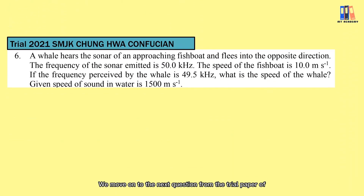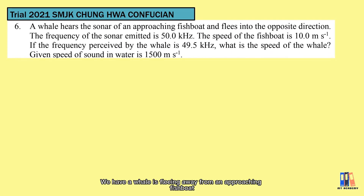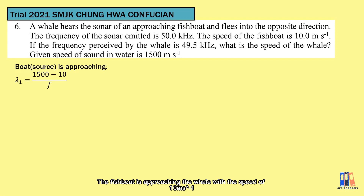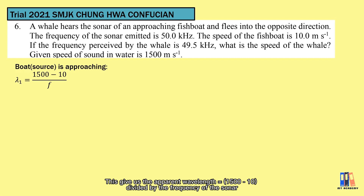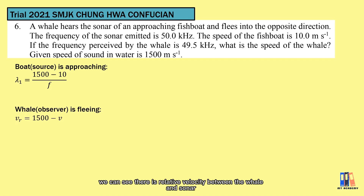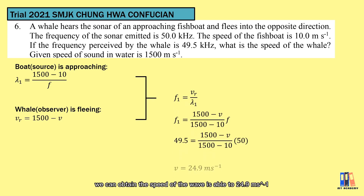The next question is from the trial paper of SMJK Chung Hua in 2021. A whale is swimming away from an approaching fishing boat that produces sonar at a frequency of 500 kHz. This belongs to the third case of Doppler effect. The fishing boat is approaching the whale at 10 m/s, giving an apparent wavelength of (1500 minus 10) divided by the sonar frequency. The whale is moving away, so the relative velocity between the whale and the sonar is (1500 minus the speed of the whale). Substituting into f equals v over lambda, the speed of the whale is 24.9 m/s.